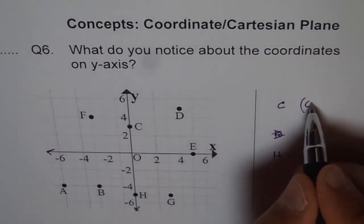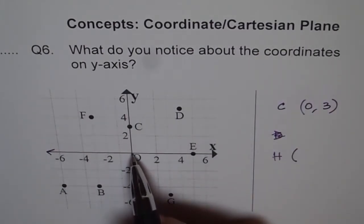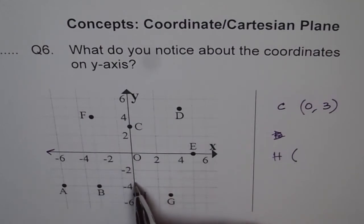So 0 for x and 3 for y. How about H? 0 for x and 1, 2, 3, 4, 5 down.